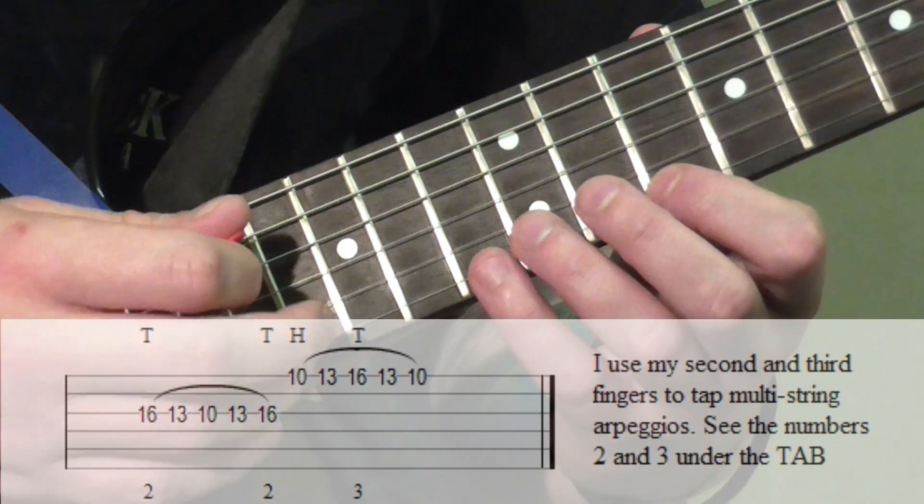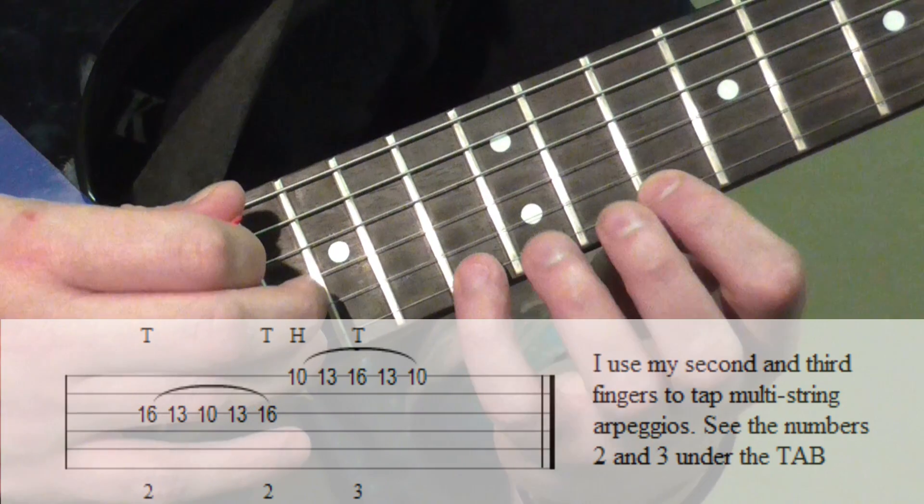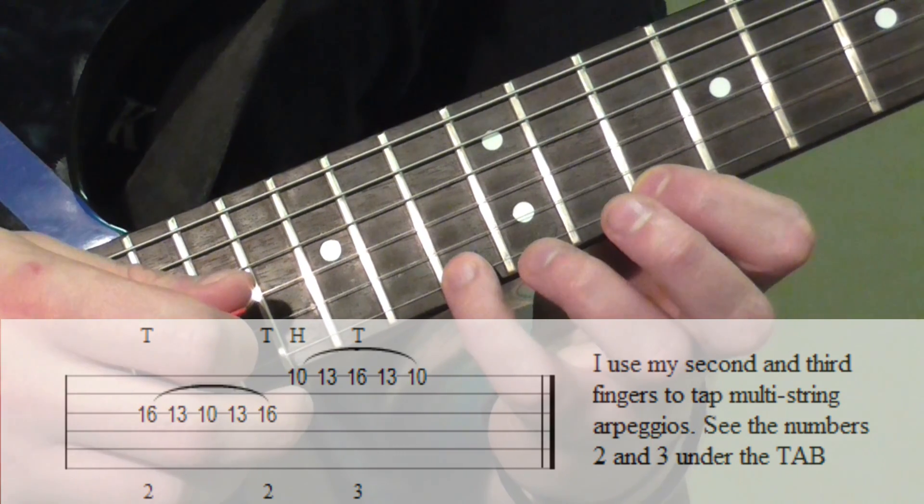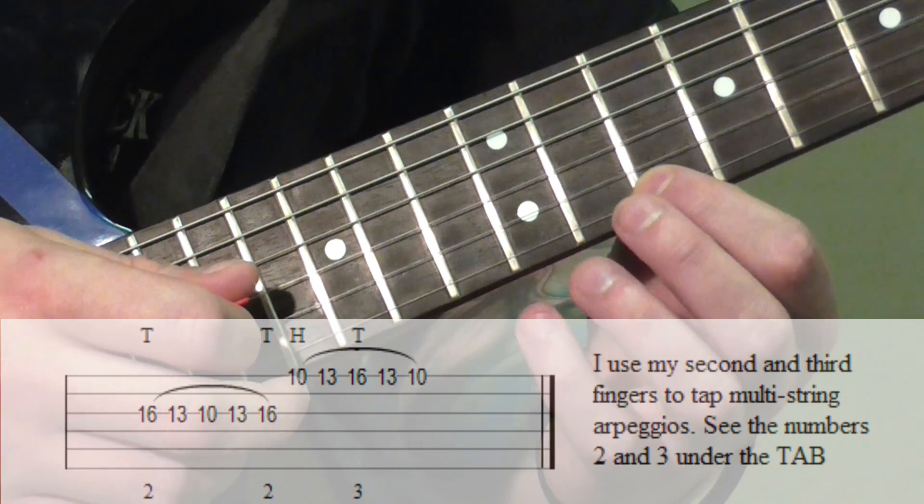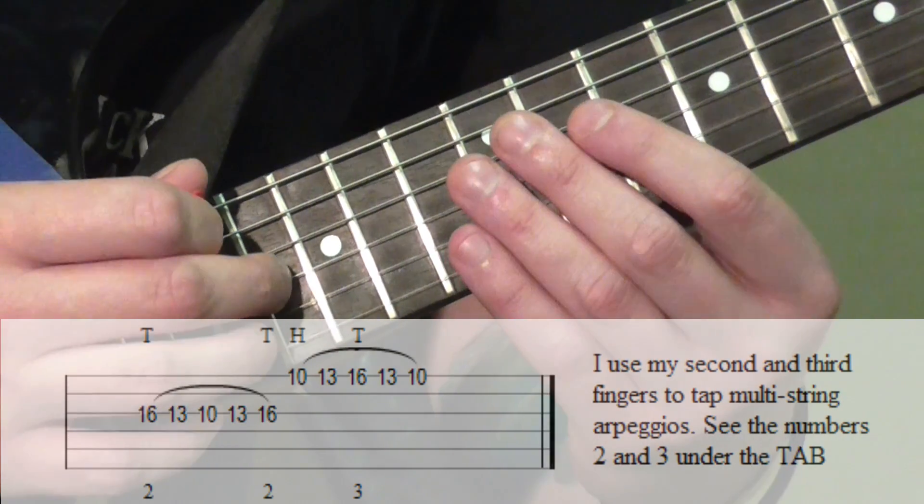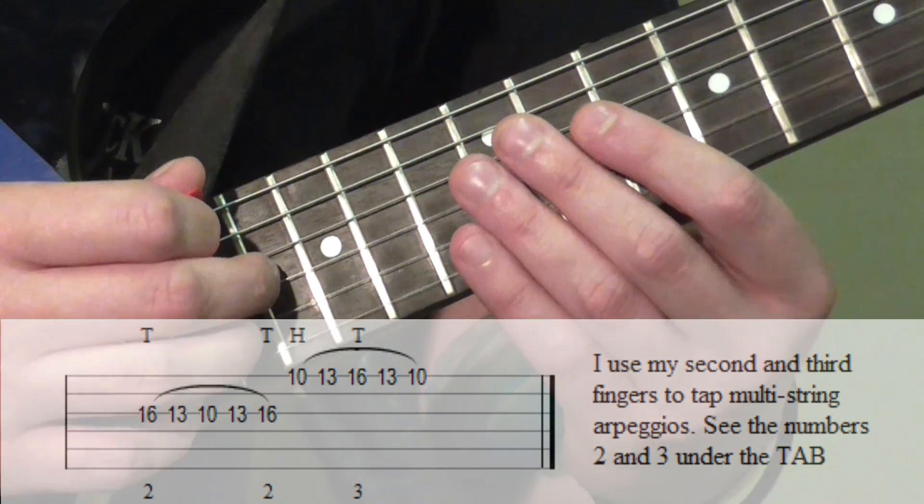To come back, you simply pull off that note, like a tapped pull-off to the pinky there, ordinary pull-off to the index. And then you do that string crossing exercise again to return to this tap note on the 16th fret of the G string.